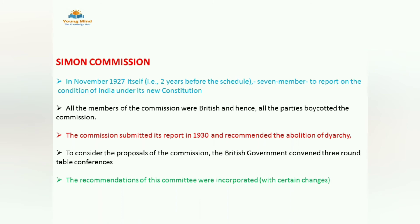The Simon Commission included 7 members and Sir John Simon was the head. All members were Britishers — not a single Indian was included. So Indians rejected this, because if they were coming to study the actual situation of India, Indians should be there in the committee. It is also called the White Commission because it contained only Britishers. They submitted their report in 1930 and recommended the abolition of Dyarchy. The British government then arranged 3 Round Table Conferences. Remember: Mahatma Gandhi attended the 2nd Round Table Conference held in England in 1931.